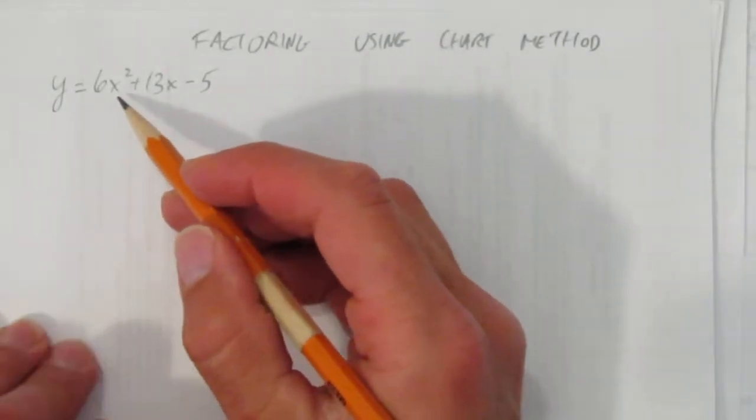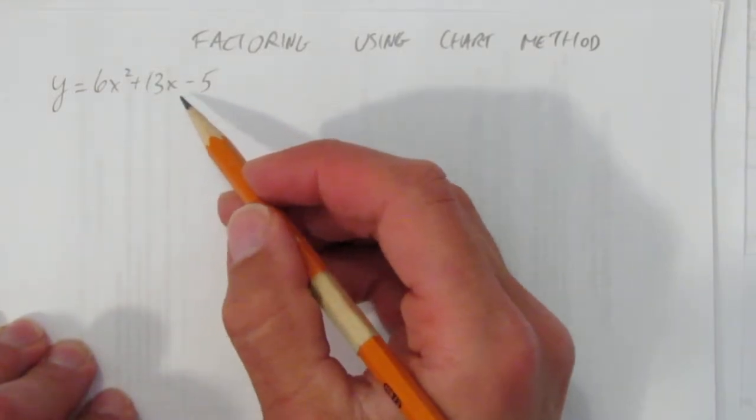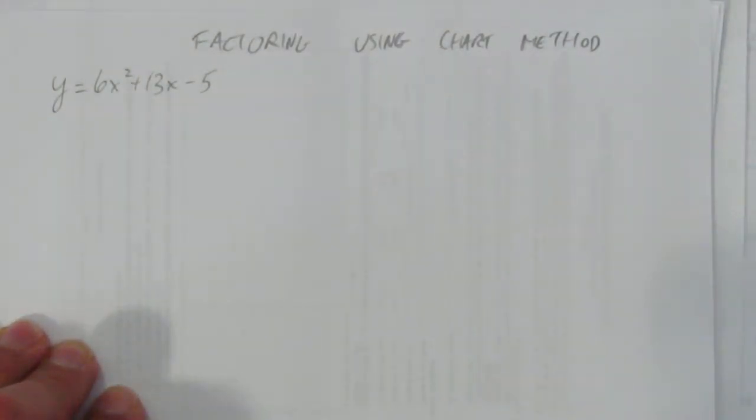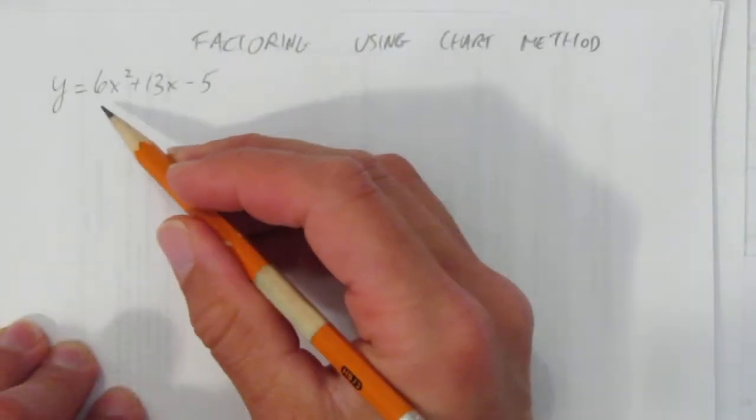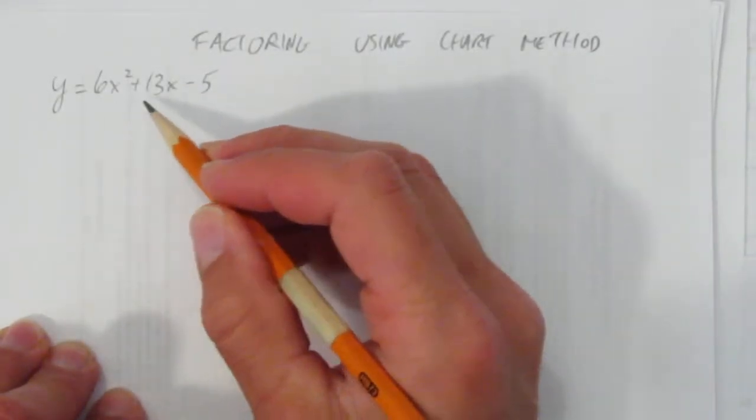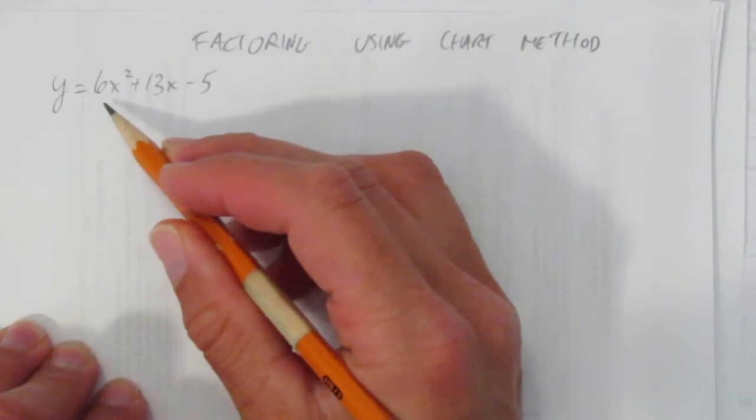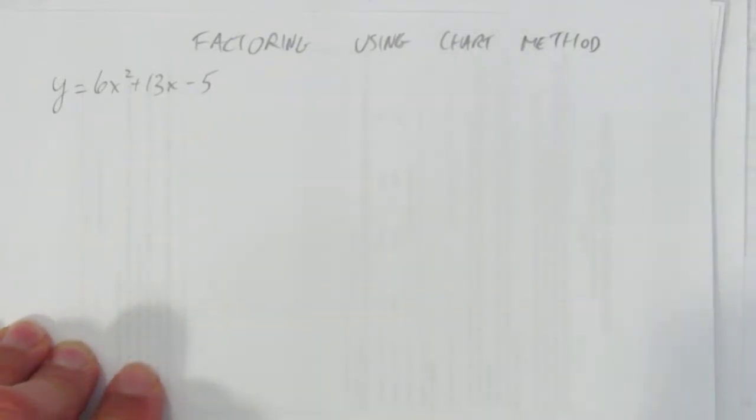The question is y equals 6x squared plus 13x minus 5. The first thing you want to do is see if there's a greatest common factor first, but there isn't. Nothing goes into 6 that goes into the 13 that goes into negative 5.